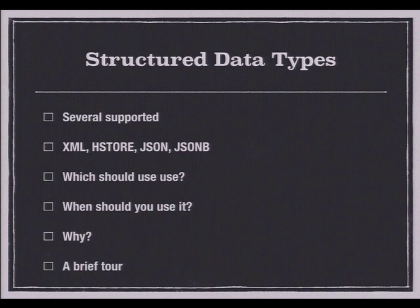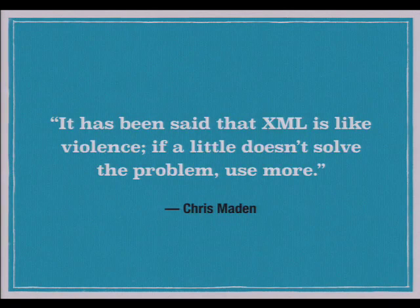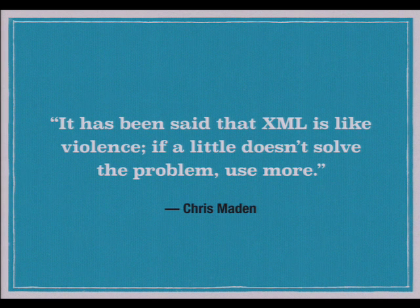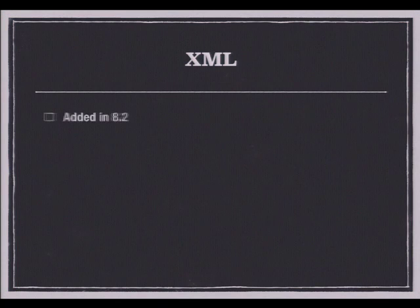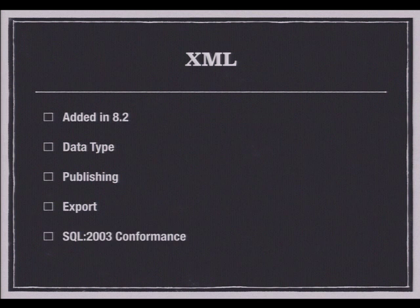So I want to do a brief tour — not three hours — of when you should use these and why. I actually hadn't done a whole lot with XML in Postgres before preparing this talk a few months ago, and I discovered it's actually pretty interesting. XML support was added in Postgres 8.2. There's a data type, and it supports publishing, data exports, SQL 2003 conformance, and XPath functionality.